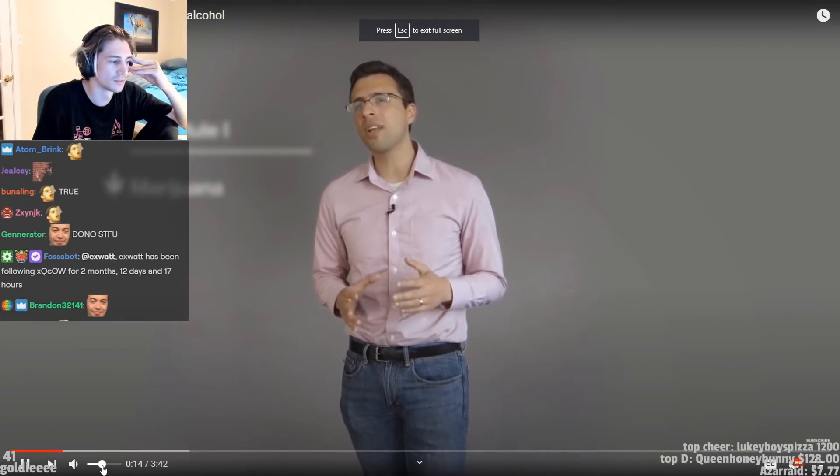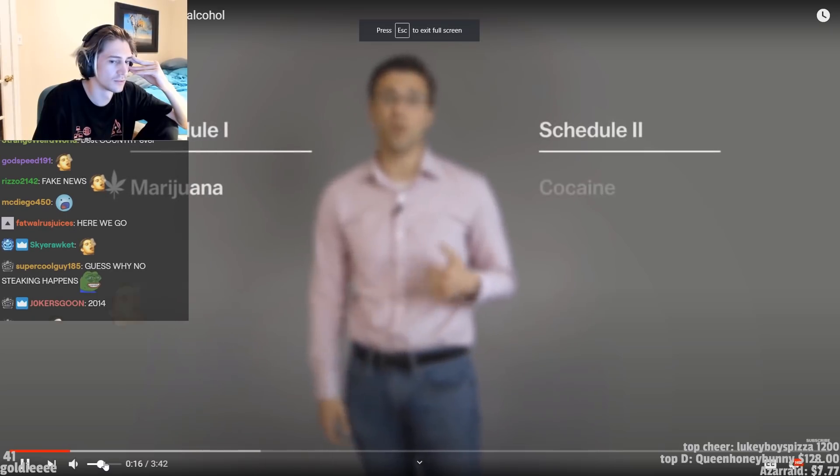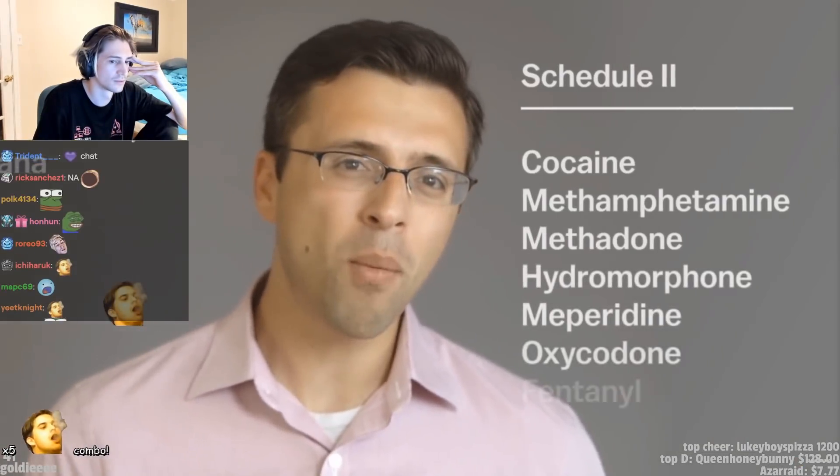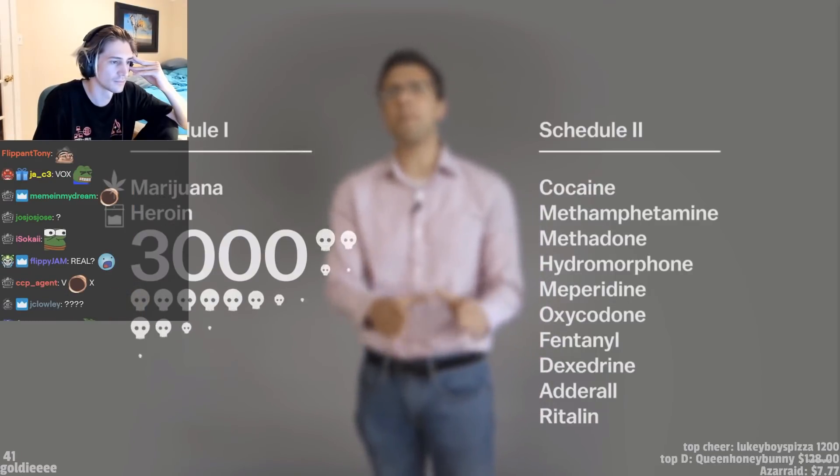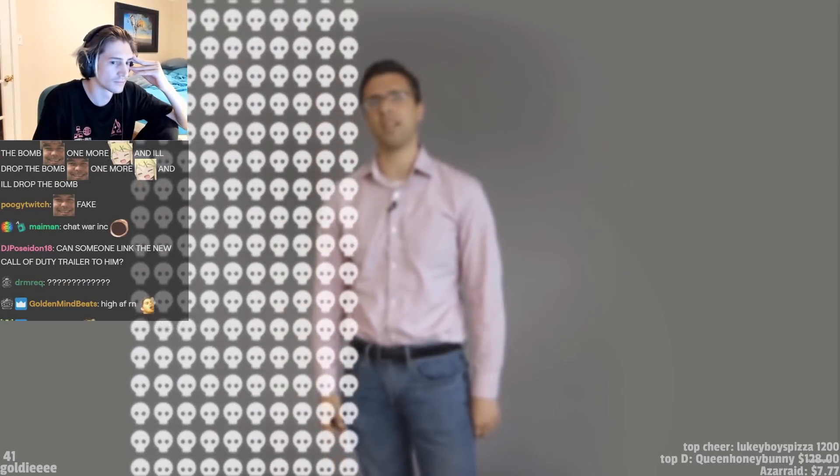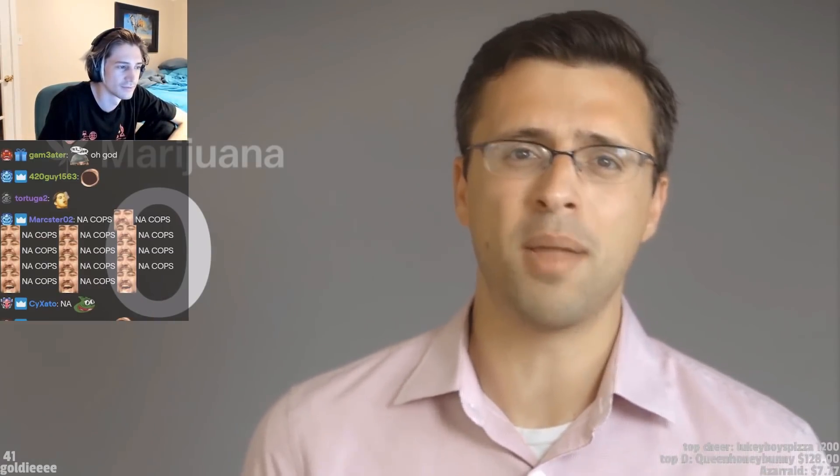That means the government thinks marijuana is more dangerous than Schedule II drugs like cocaine or meth. It means they think marijuana is on the same plane as heroin. About 3,000 people died from heroin overdoses in 2010. You know how many people died directly from overdosing on marijuana? Zero. Zero. And I don't mean zero in 2010. I mean zero in basically recorded human history.